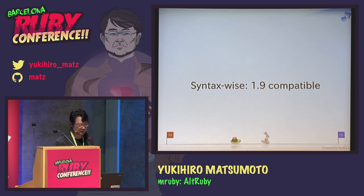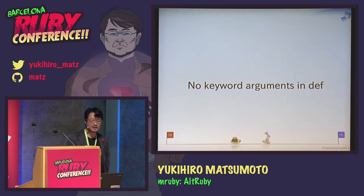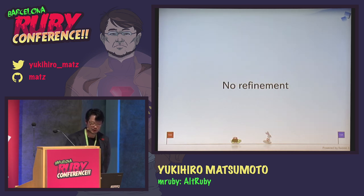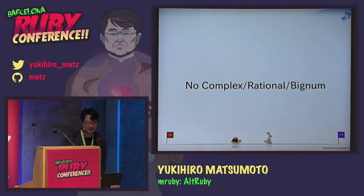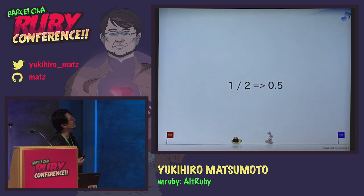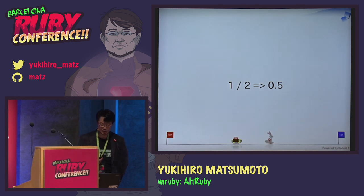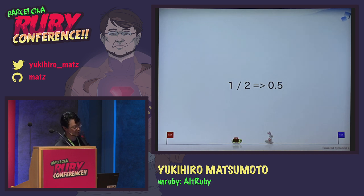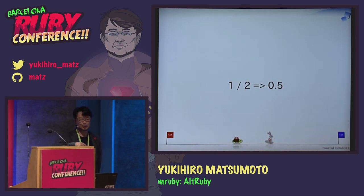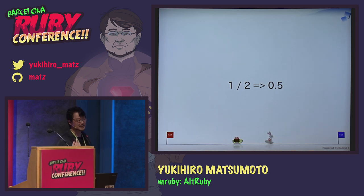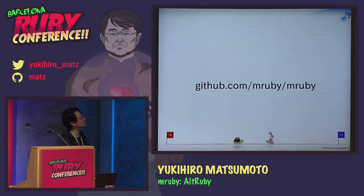Syntax-wise, MRuby is Ruby 1.9 compatible. We don't have keyword arguments, no refinements, no complex big numbers. The biggest difference from CRuby is that 1 divided by 2 becomes 0.5, because if an integer overflows it goes to float instead of bignum. Float and integers are more interoperable in MRuby than in CRuby.